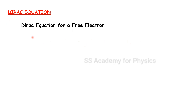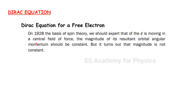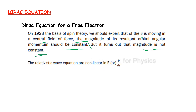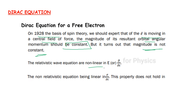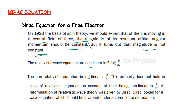Dirac equation for a free electron: on the basis of spin theory in 1928, when the electron moves in a central field of force, the magnitude of the resultant orbital angular momentum should be constant. But it turns out that the magnitude is not constant, so the relativistic wave equation should be non-linear. The non-relativistic equation being linear in dou by dou t, this property does not hold in the relativistic case.